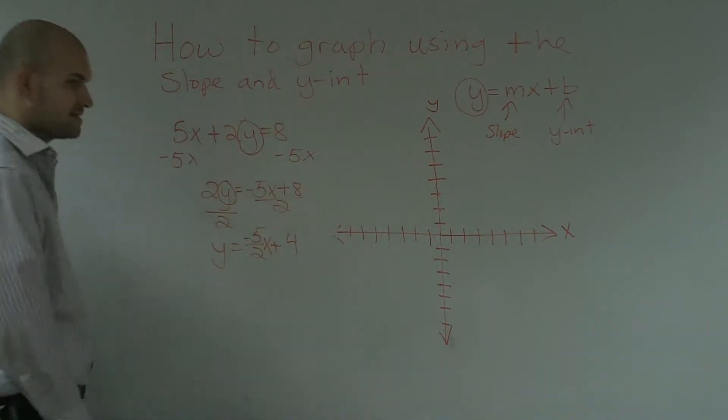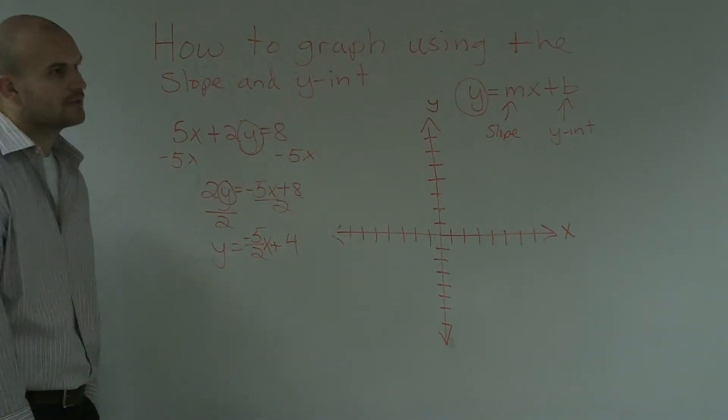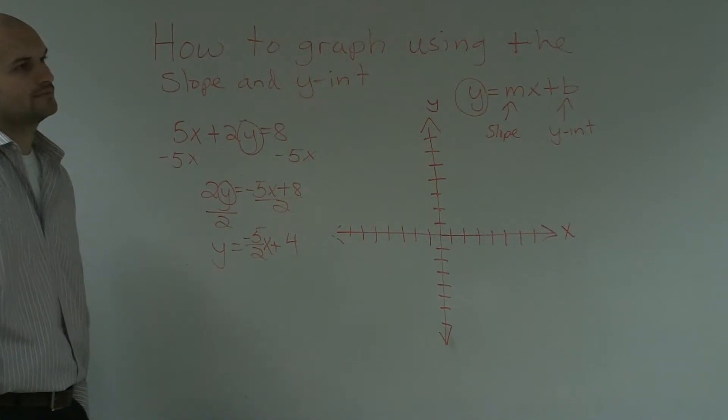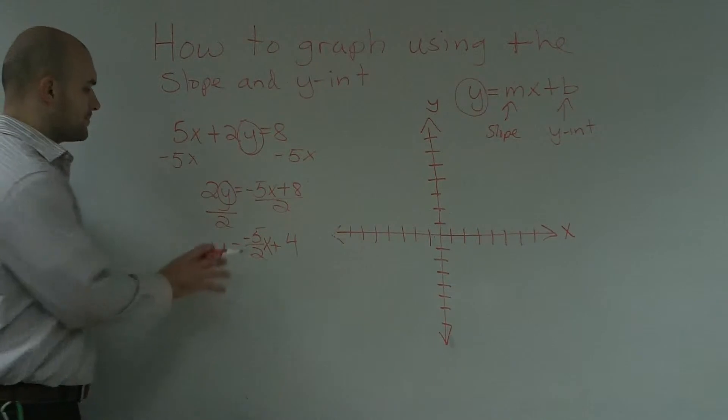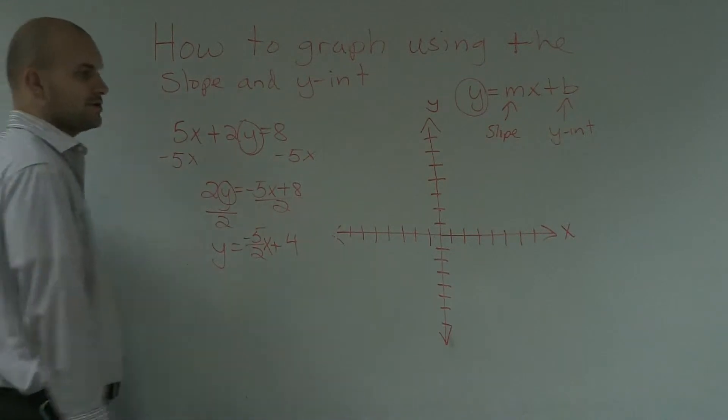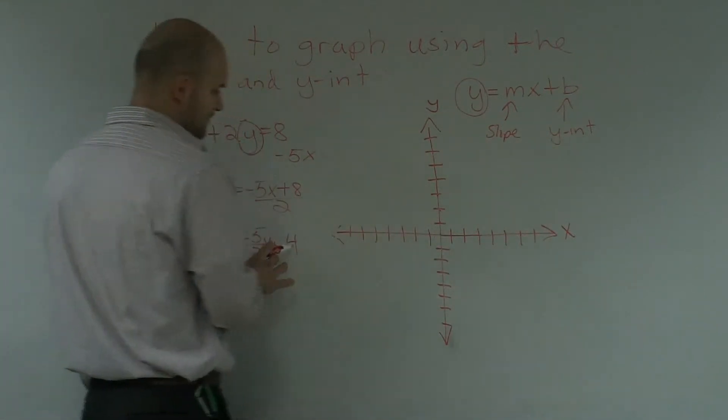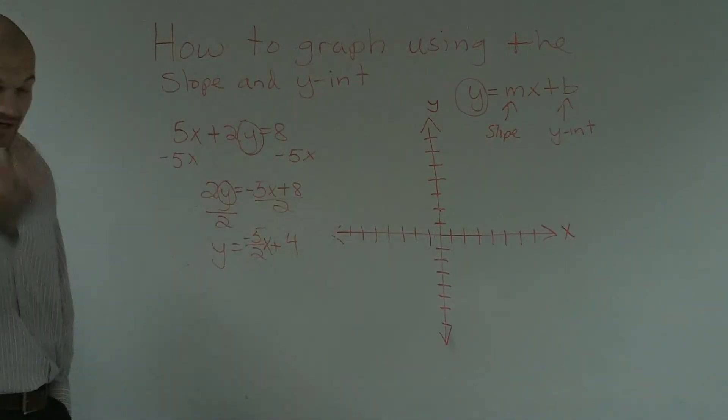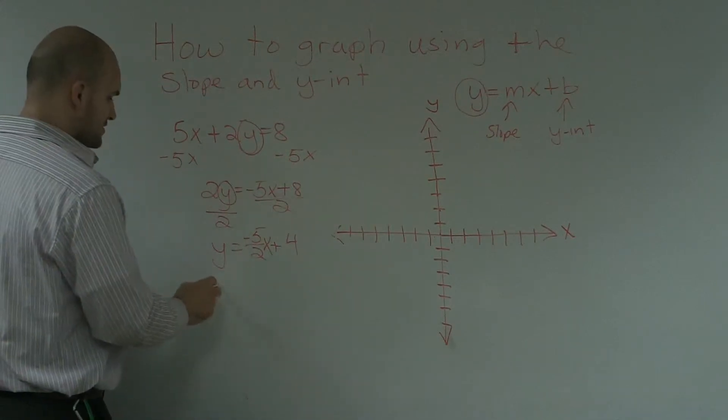Sorry, that's negative 5x. So, y equals negative 5 halves x plus 4. So to go ahead and graph this, what I'm going to do is I'm going to go up. I'm going to find the y. I'm sorry. Before I go ahead and graph this, I need to determine what my slope and y intercept are.